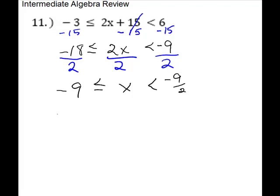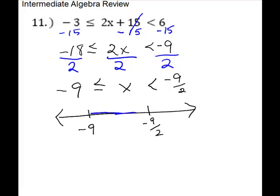We are supposed to graph on a number line, so we show our endpoints: negative 9 and negative 9 halves. It doesn't really matter where that goes — we do have them in numerical order. x is in between those, so we're going to shade the middle section. For negative 9, there's an equals sign underneath, so that will be a bracket opening in the direction of your shading.